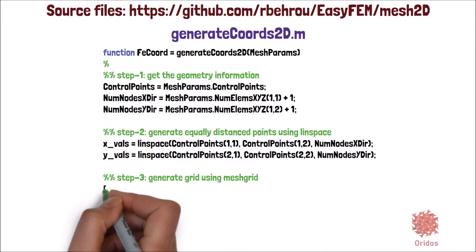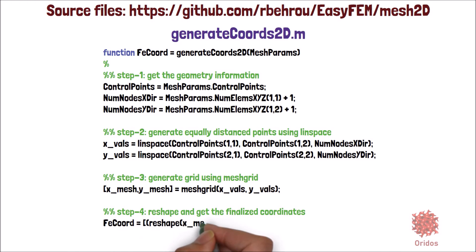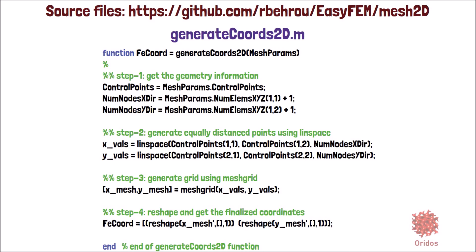In step three, we generate a 2D grid using MATLAB meshgrid function. And finally, in step four, we reshape the meshgrid outputs and return the nodal coordinates. The size of nodal coordinates matrix will be equal to the number of total nodes with two columns.